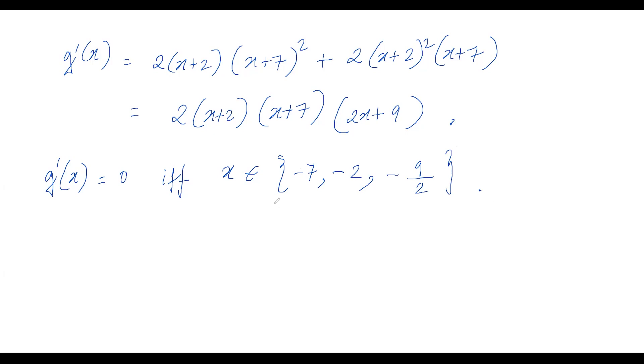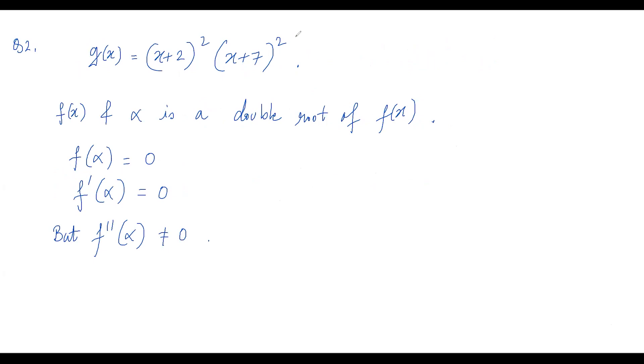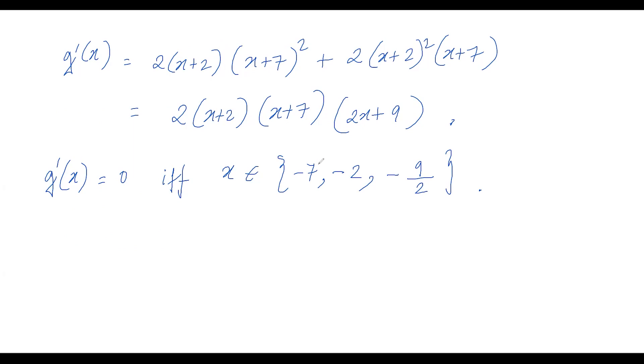But we see that if α is -7, then not only is -7 a double root, but also -2 is also a double root. But we should have exactly one double root, and so a cannot be equal to zero, and so these two are not our options.